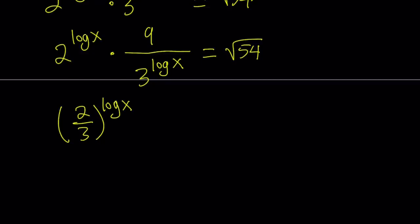This is multiplied by 9, but we can go ahead and divide both sides by 9 and that's going to give us square root of 54 divided by 9. And don't do these mistakes. You know, sometimes people make these mistakes.